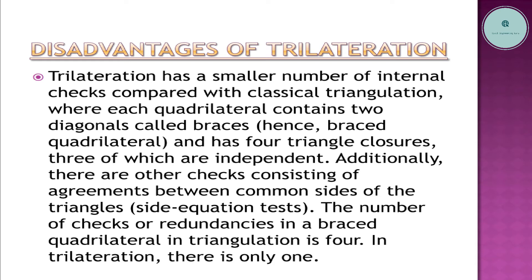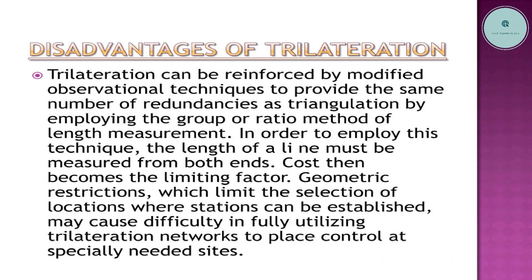Trilateration has a smaller number of internal checks compared with classical triangulation. In triangulation, each quadrilateral contains two diagonals called braces — hence the term braced quadrilateral — and has four triangle closures, three of which are independent. Additionally, there are other checks consisting of agreements between common sides of the triangles, known as side equation tests. The number of checks or redundancies in a braced quadrilateral in triangulation is four; in trilateration there is only one.